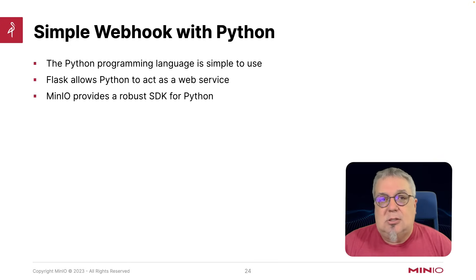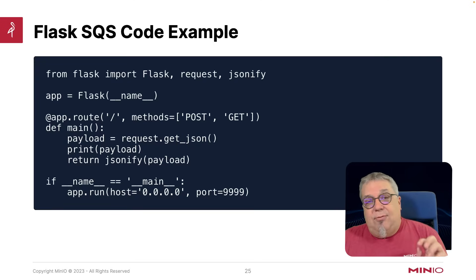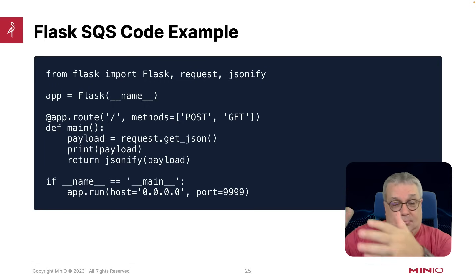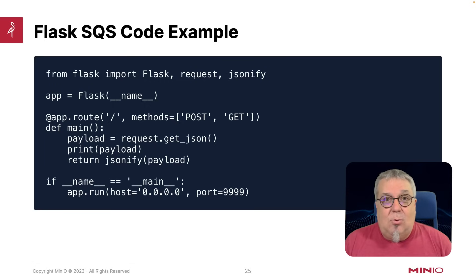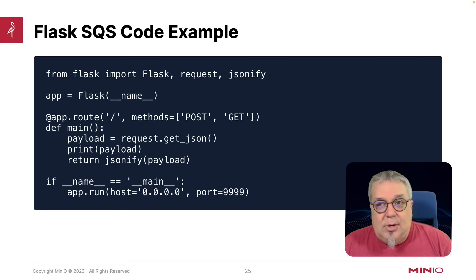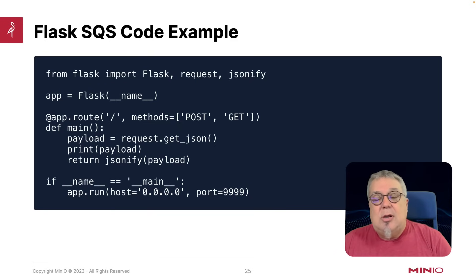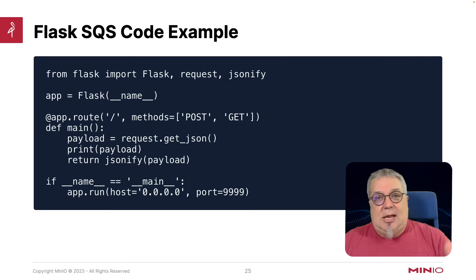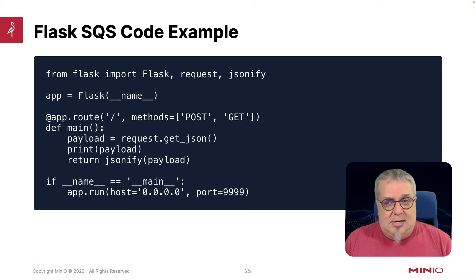I just run this on any system that supports Python and I'm good to go. As far as a Flask SQS code example goes, I can literally do exactly this — grab this code, drop it into whatever Flask-enabled Python environment you have, and deploy it. Now you have a webhook running on port 9999 that you can subscribe to. All I really need to do is manage the request: get the JSON from the request to get my payload, and make sure I'm returning the jsonified payload. I want to make sure I'm saying yes, I received this message. It responds on both POST and GET, with just a slash as the route.